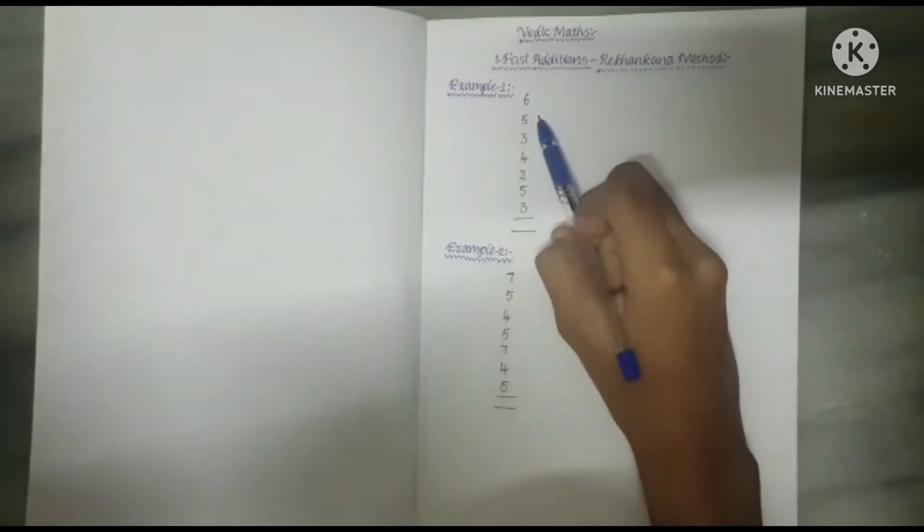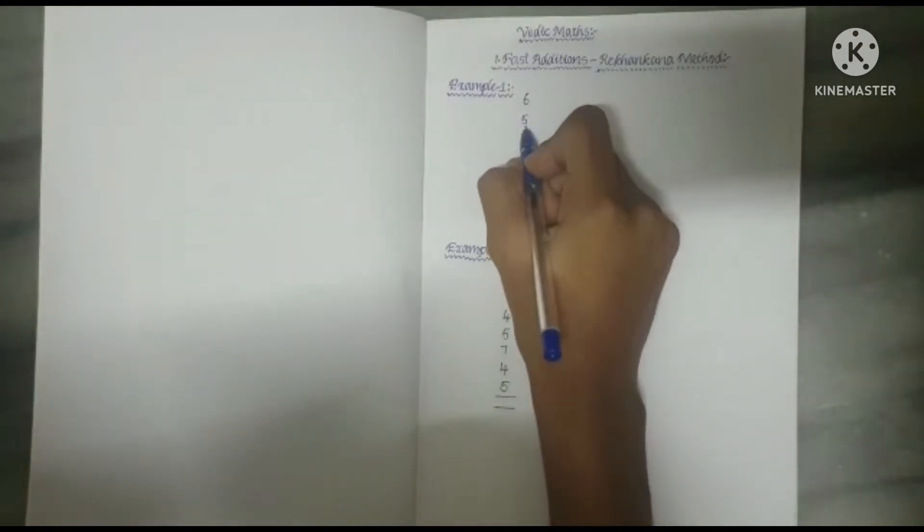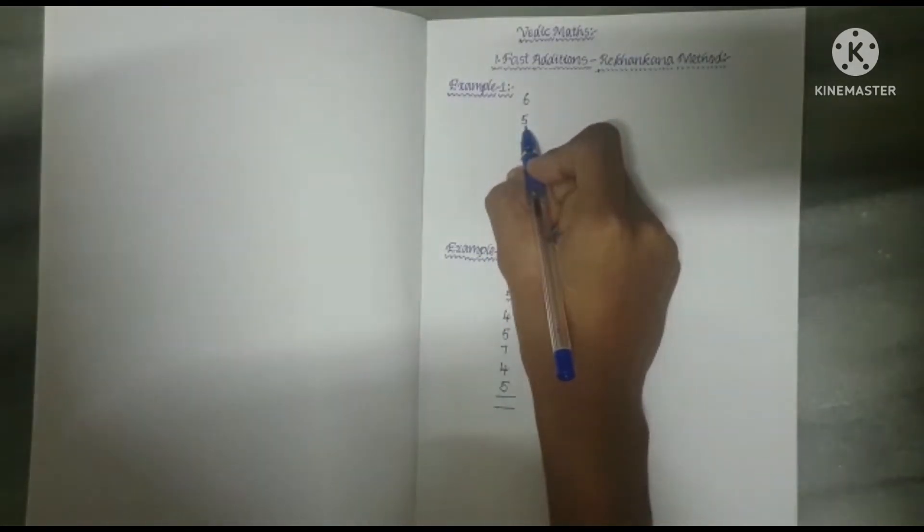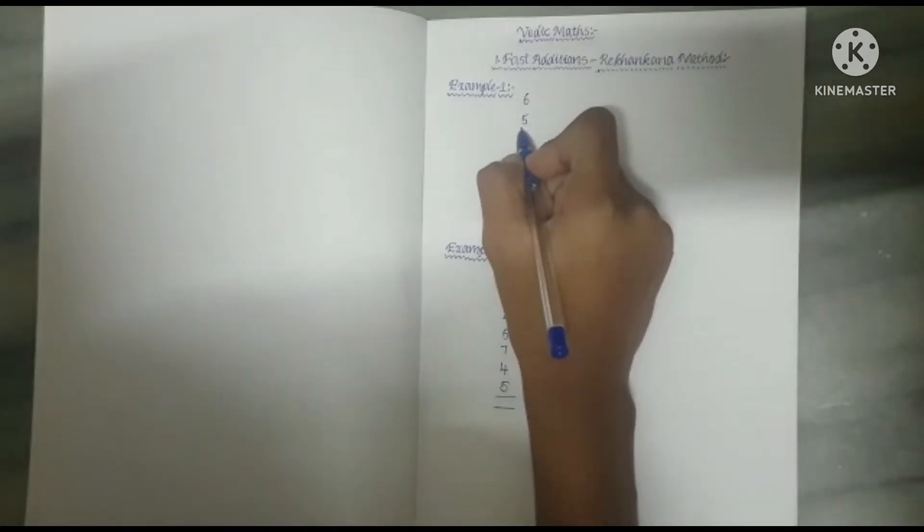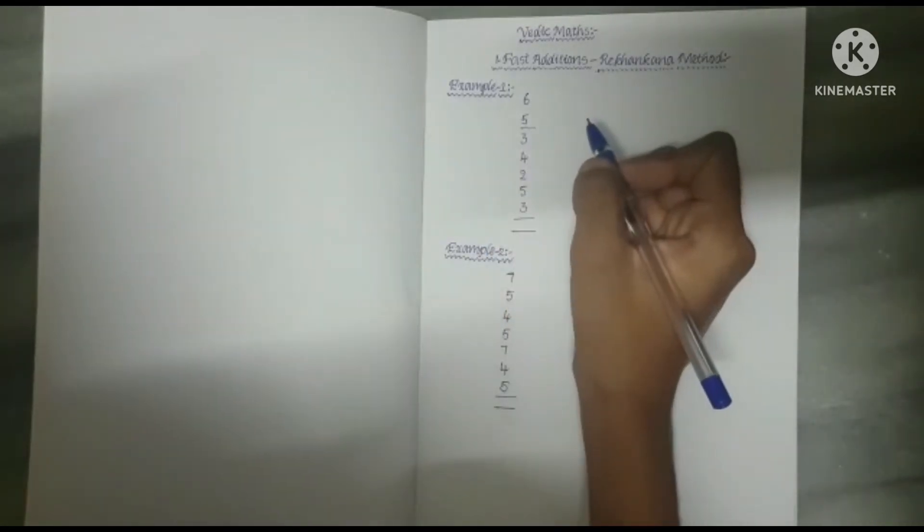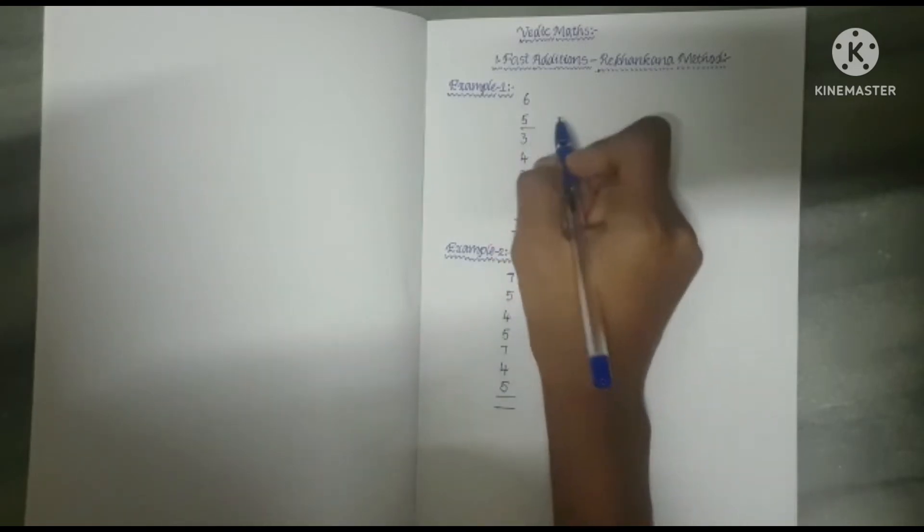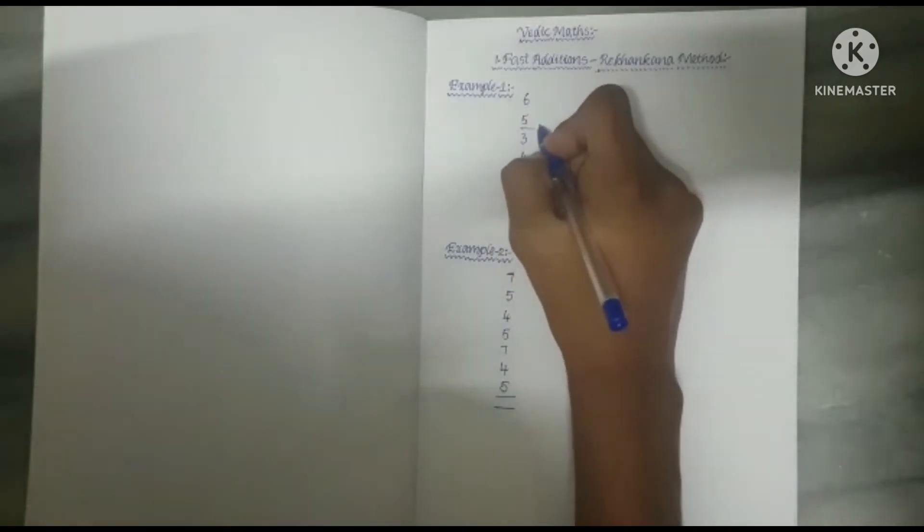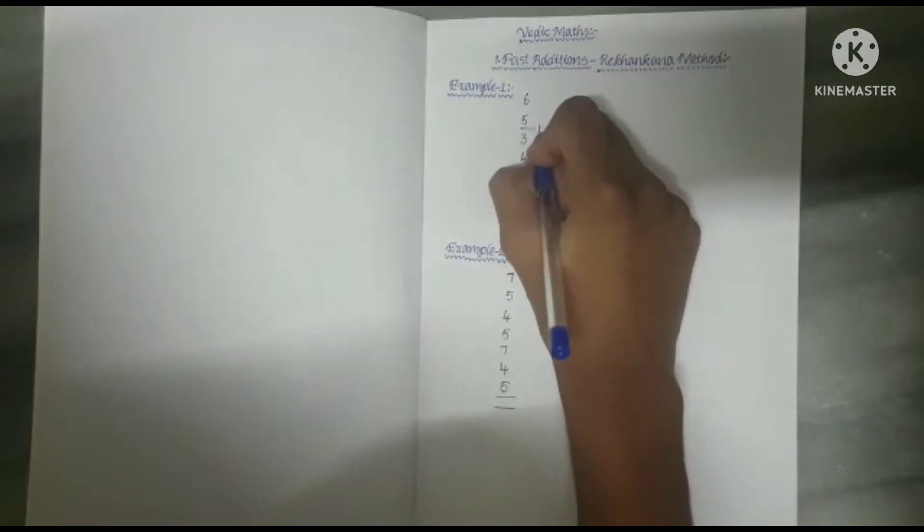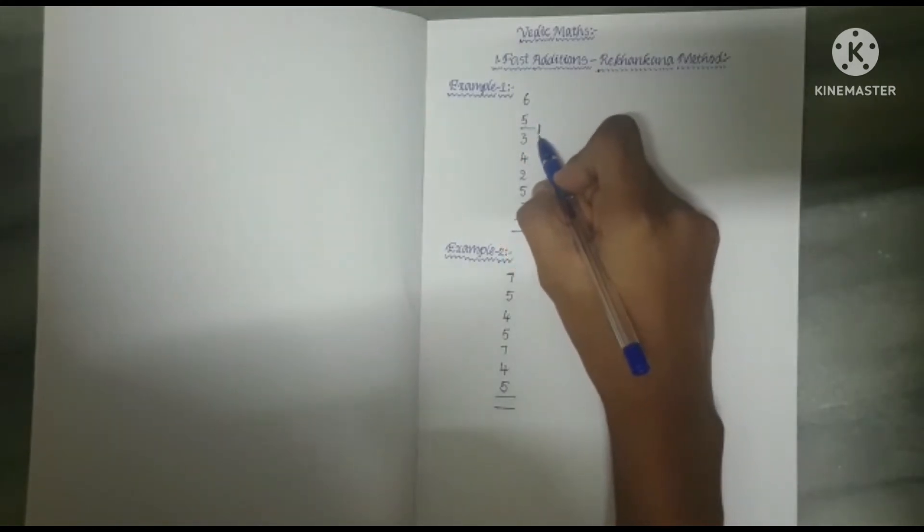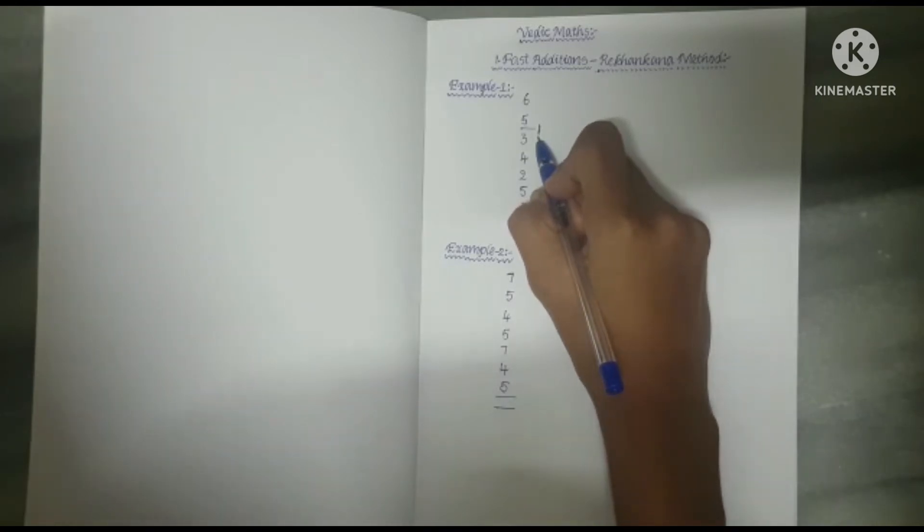Example 1. Here 6 plus 5 is equal to 11. As 11 is more than 10, here we drop a line under 5 as 10 and 1 is carried forward. Now we have to add the numbers along with the carried forward number. Until we get 10 or more than 10, we have to add the digits.